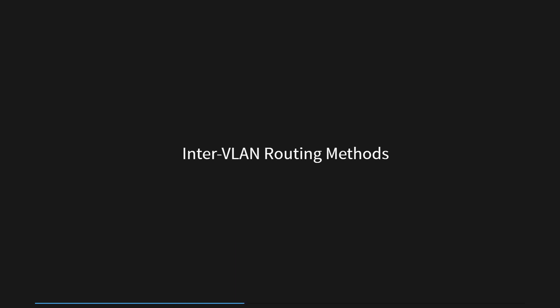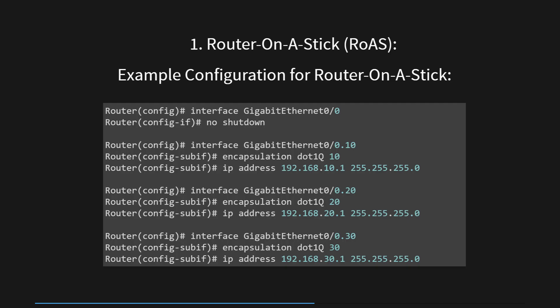There are three primary methods to implement inter-VLAN routing. The router-on-a-stick approach involves using a single physical router interface to connect to a trunk port on a switch. The router interface is then configured with multiple logical sub-interfaces, each associated with a specific VLAN. These sub-interfaces operate as if they were separate physical interfaces, routing traffic between the VLANs. This method is suitable for small-scale deployments and environments with limited VLANs.